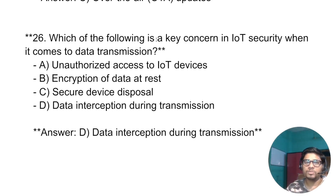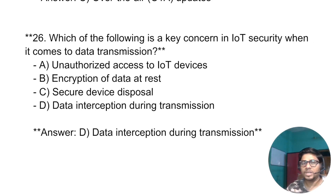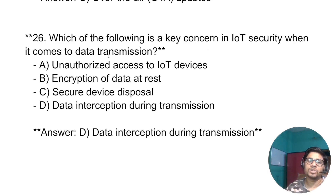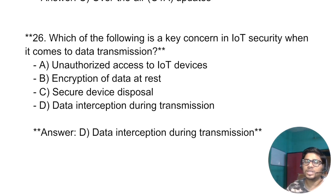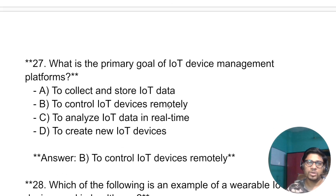Which of the following is the key concern in IoT security when it comes to data transmission? The options are: unauthorized access to the IoT device, encryption of the data, security device disposal, or data interception during transmission. The answer is: data interception during transmission.